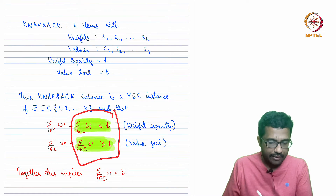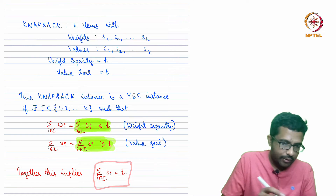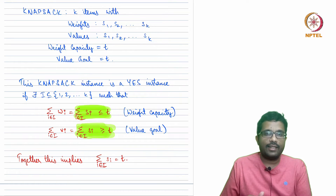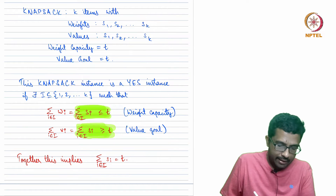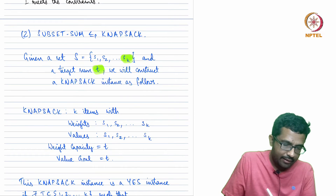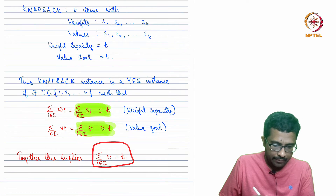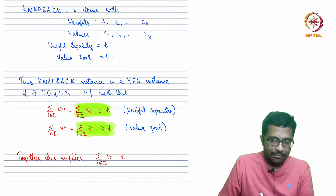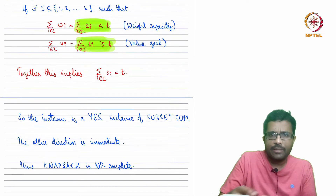We now have two inequalities: the sum of the selected si is at most t, and the sum of the selected si is at least t. Combining these, if the Knapsack instance is a yes-instance, the sum of the selected si equals exactly t. This is precisely the condition for a yes-instance of Subset Sum — a subset of S that sums to the target. The reverse direction follows by the same argument.